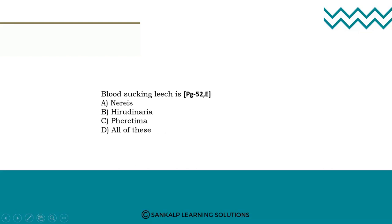Next question: Blood-sucking leech is — option A Nereis, option B Hirudinaria, option C Pheretima, option D all of these. The right answer is option B, Hirudinaria, which is the scientific name of the blood-sucking leech.